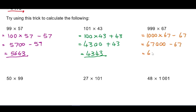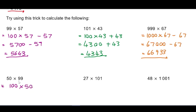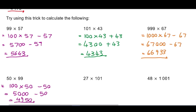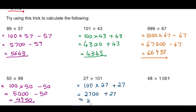50 × 99: that's 100 lots of 50 minus one lot of 50, so 5000 − 50 = 4950. 27 × 101: that's 100 lots of 27 plus one more lot of 27, so 2700 + 27 = 2727. We really want you to become comfortable with numbers.